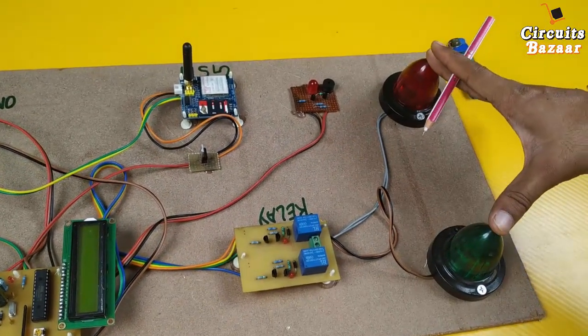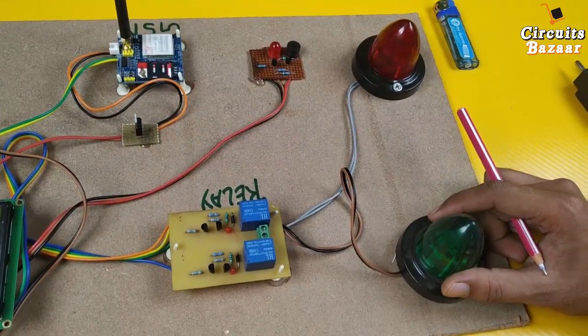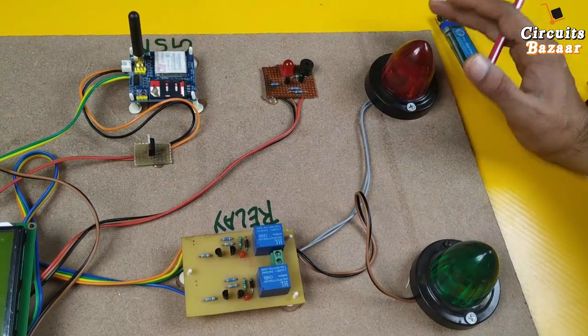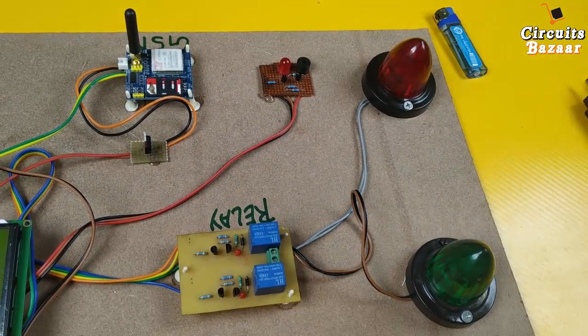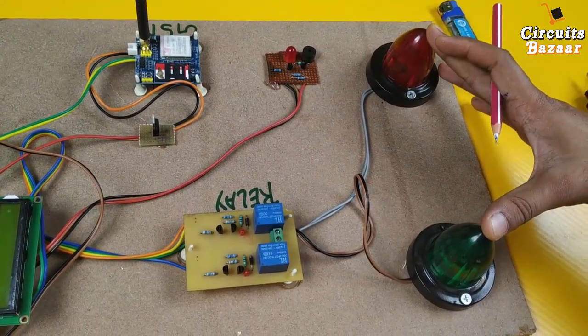Now if I talk about these two high power red and green indicators - this green indicator will be on when air quality is in control, and this red indicator will be on when air quality will decrease or when the number crosses 550. These are running on high current. That's why you cannot drive these two using microcontroller.